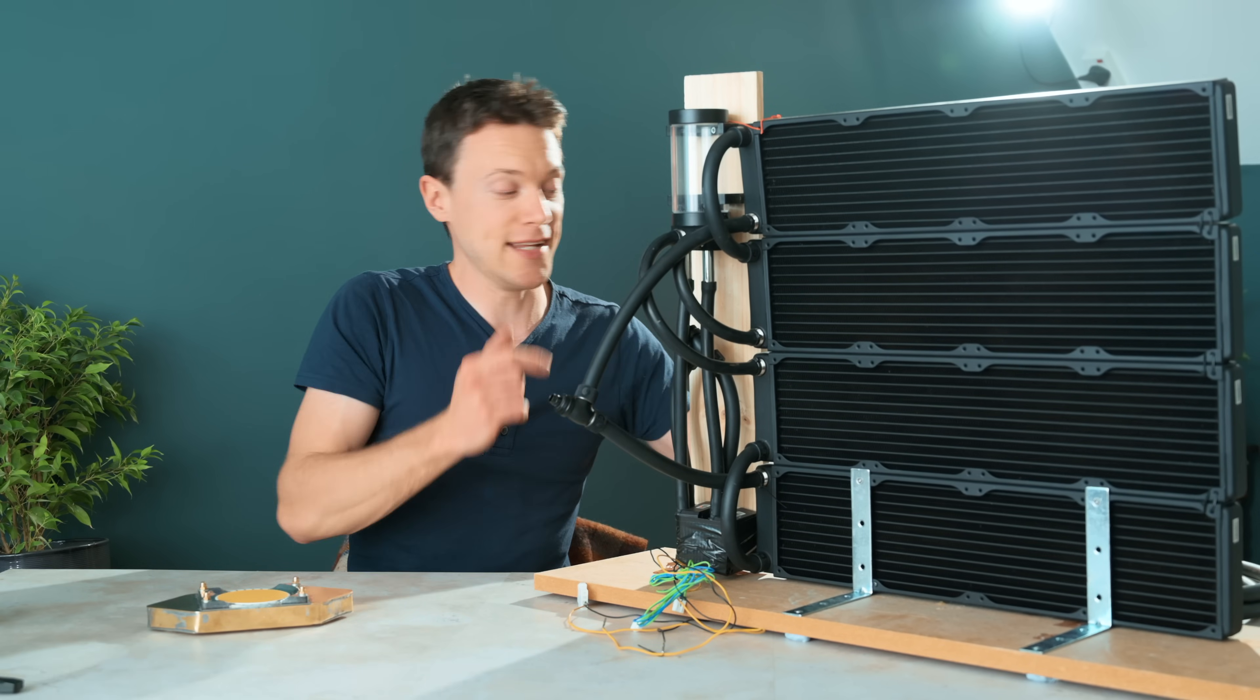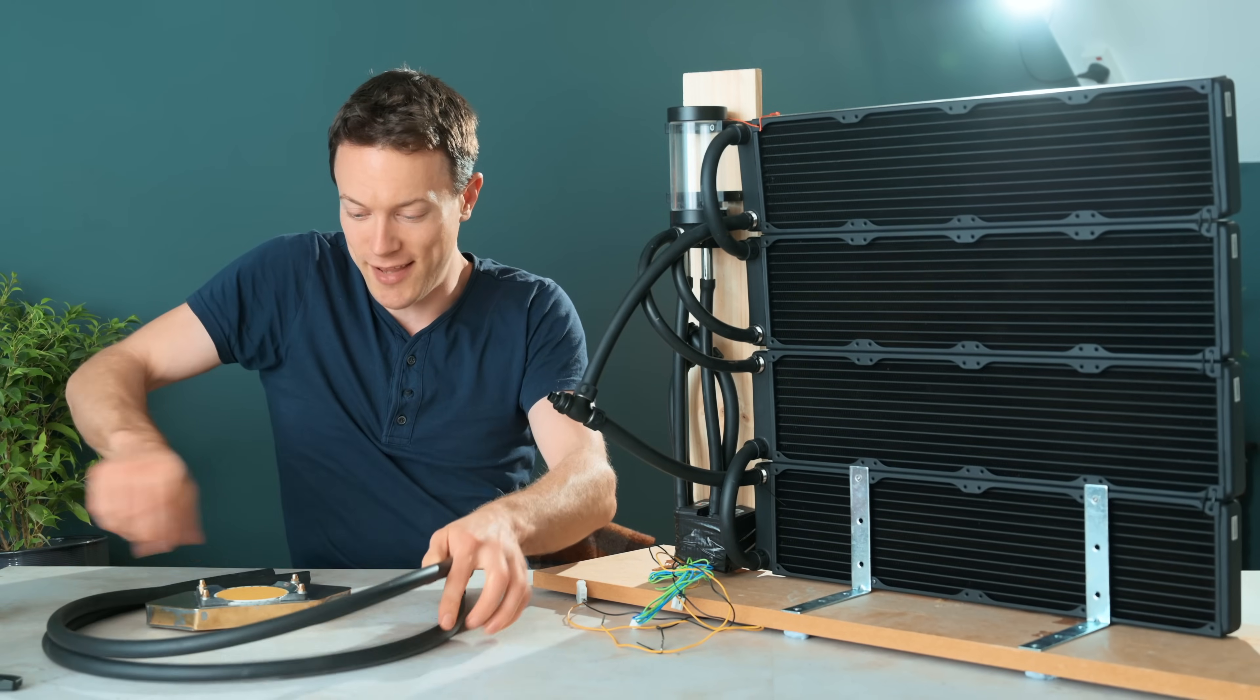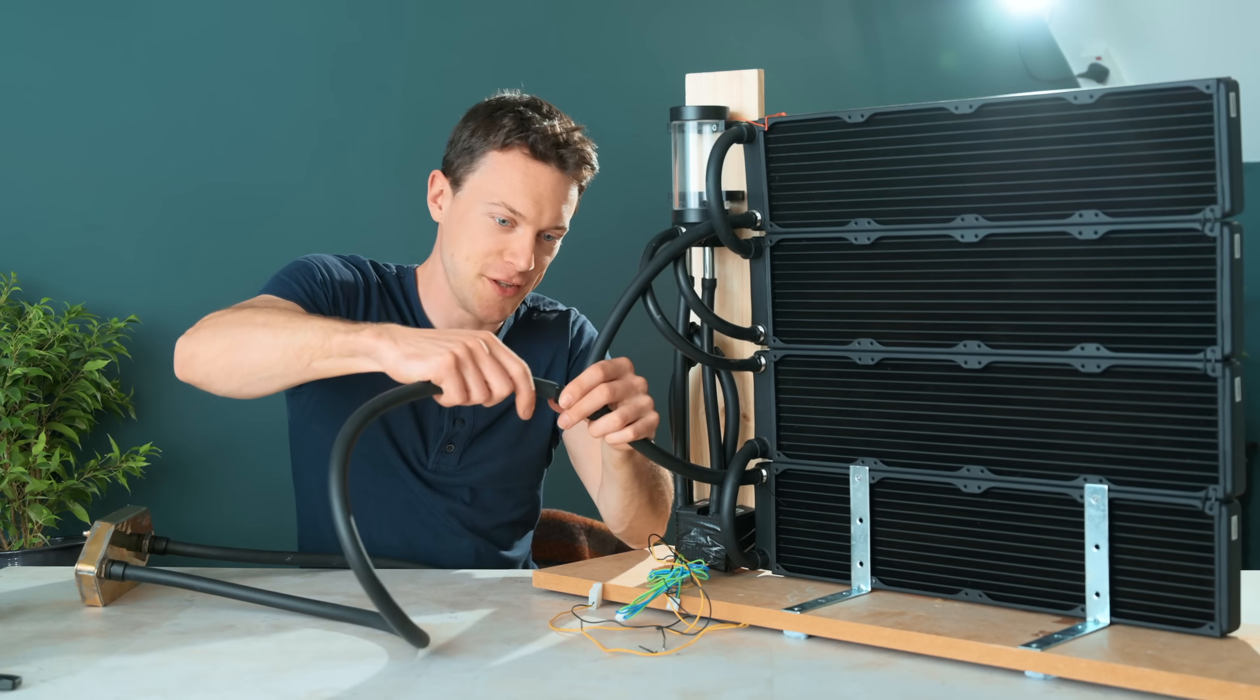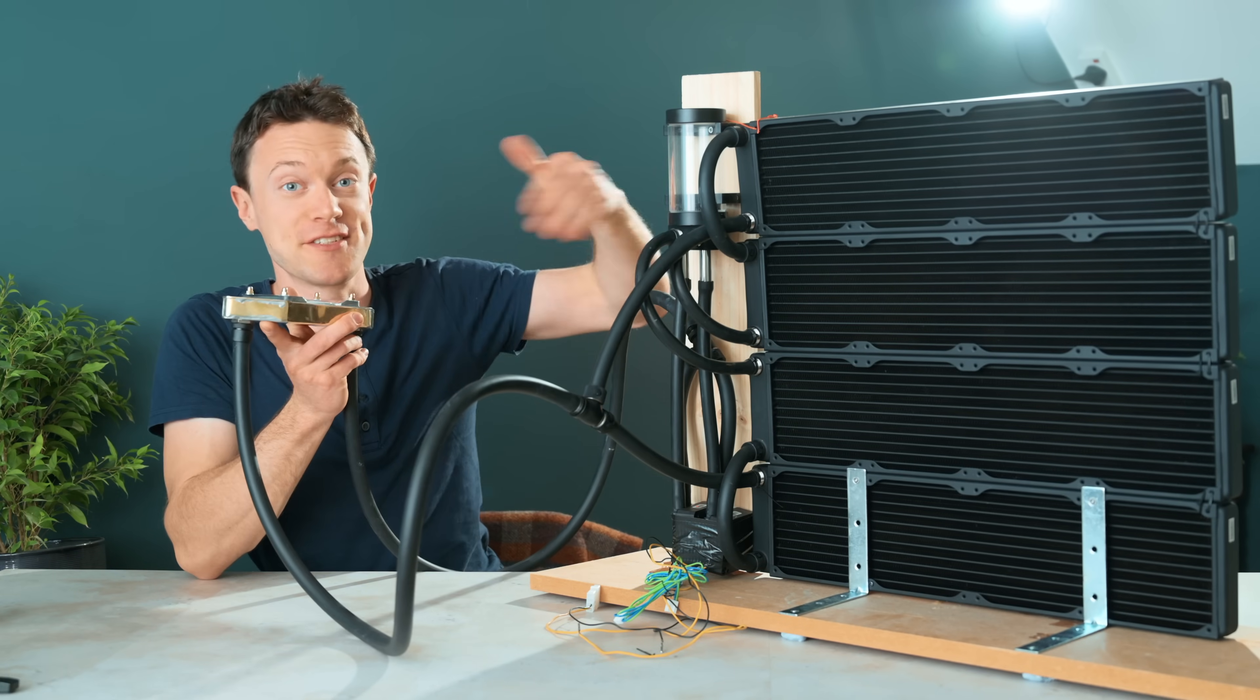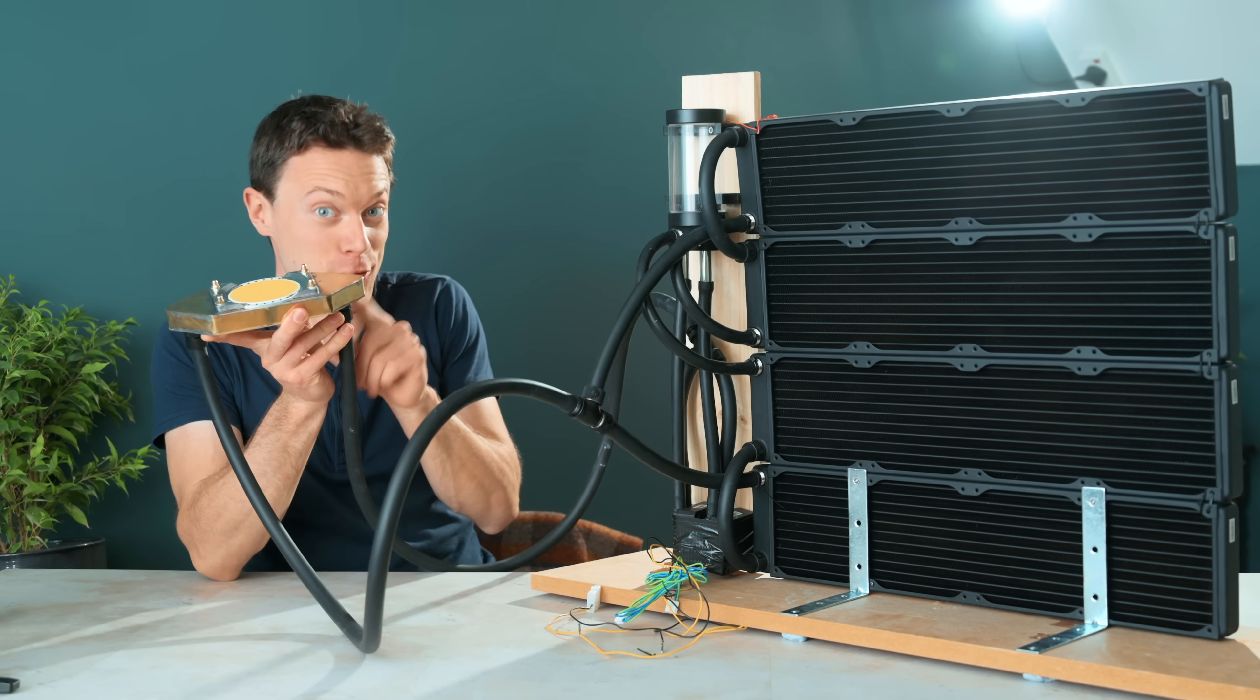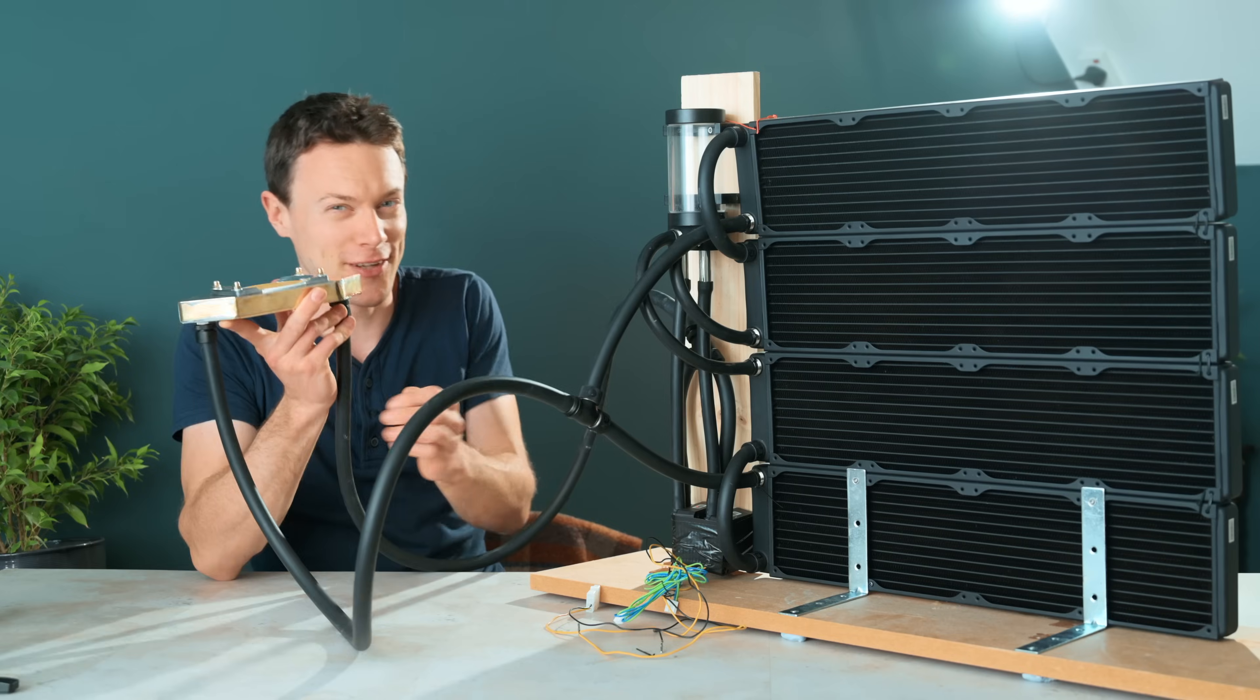Now to loop the LED into this it's just a case of using the appropriate components and they can just be screwed in like so and then attached to the loop. So with that done it's now time to fill this with water and see whether the system works and whether the water block is actually watertight because leaks are definitely something that we don't want. So let's get to that.